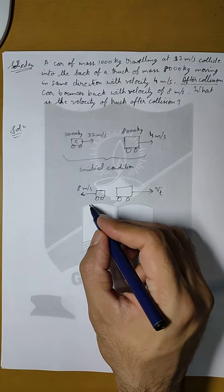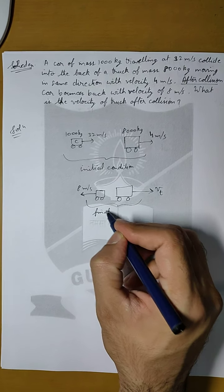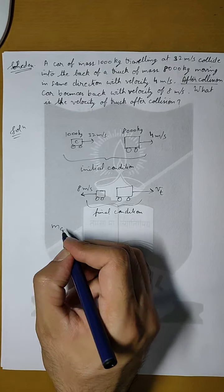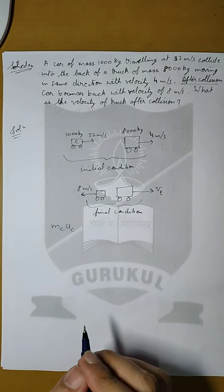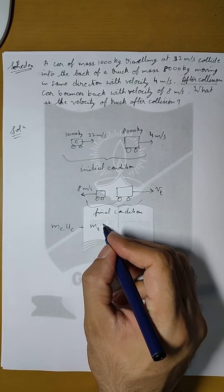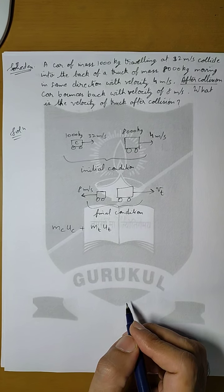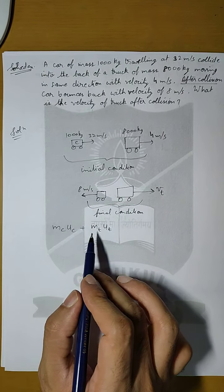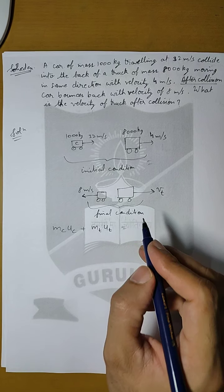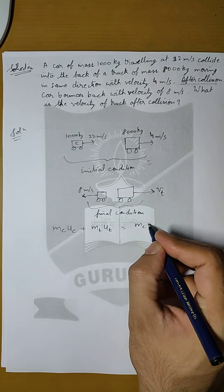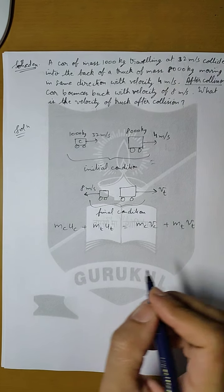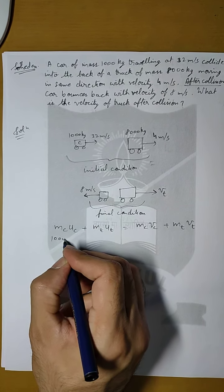We have to find the value of Vt. This is our final condition. Our initial momentum should be equal to the final momentum. That means: mass of car multiplied by initial velocity of car, plus mass of truck multiplied by initial velocity of truck, equals the initial momentum of the system. This equals the final momentum: mass of car into final velocity of car, plus mass of truck into final velocity of truck.